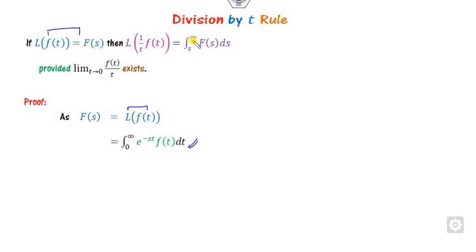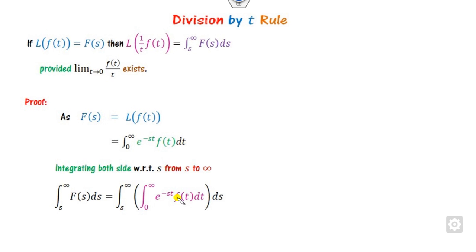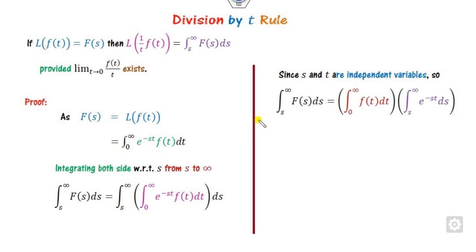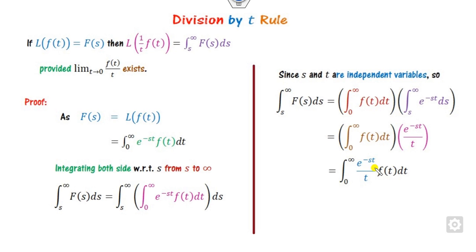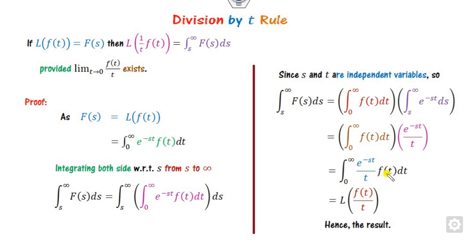Since we need the integration from s to infinity, you can integrate from s to infinity on both sides. This is the function with respect to s, and this is the function with respect to t only. Since s and t are independent variables, you can change the order of integration. You can calculate the integration of this part, and since this is with respect to t, s is not a constant. Comparing, f(t) divided by t gives us the Laplace transformation of f(t)/t equals the integration from s to infinity of F(s) ds. That is the simple proof.